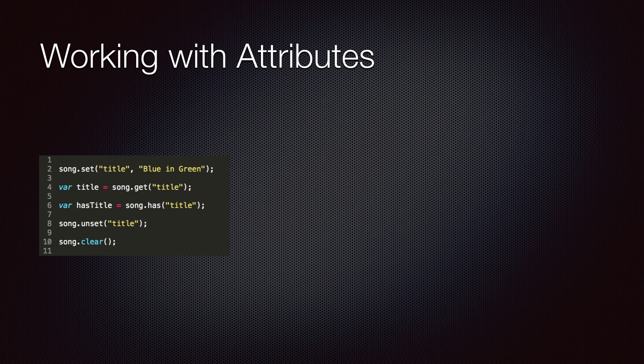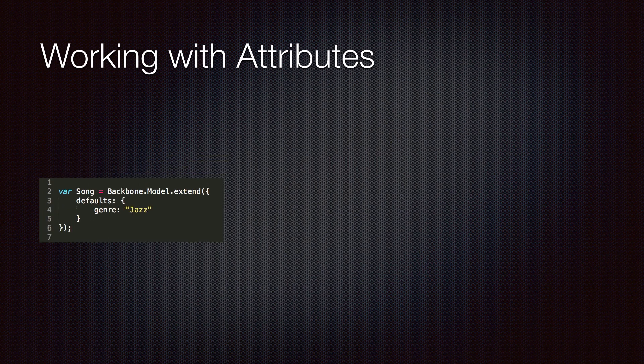So to summarize: we use the set method to set an attribute, and the get method to read it. We can ask a model if it has a given attribute by calling the has method. We can call unset to remove an attribute, and clear to remove all attributes. When defining our model, we can specify default values for attributes — if attributes are not initialized when instantiating the model, the default values will be set. In the next lecture, we'll talk about how to add validation to our models.